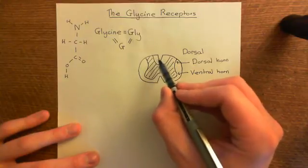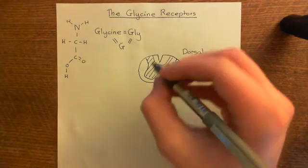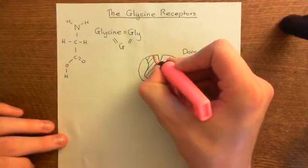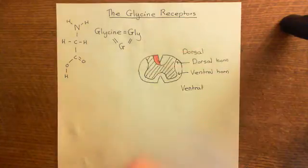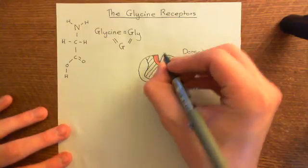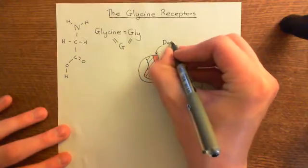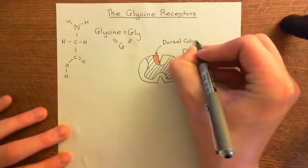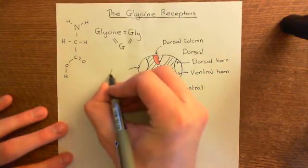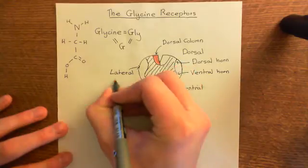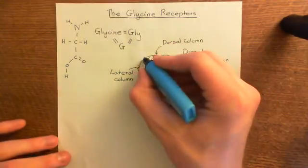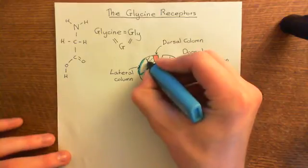You also have columns of white matter. So you have these two pieces of white matter at the back — this white matter here, which I'm colouring in pink, is a dorsal column. You obviously have two dorsal columns: the left dorsal column and the right dorsal column. You then have two other columns — you also have the lateral column here, which is the lateral white matter column, which I'll colour in blue.